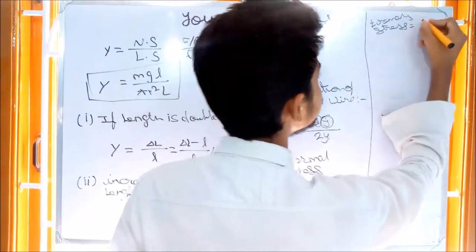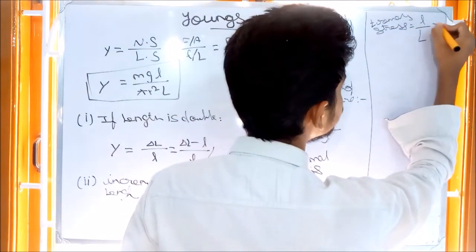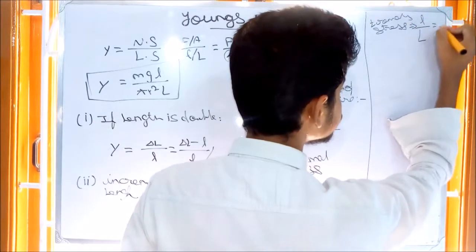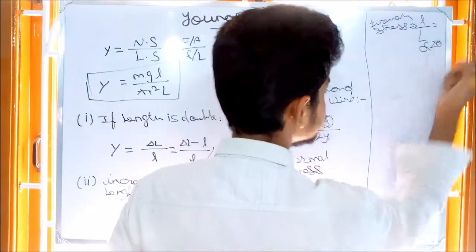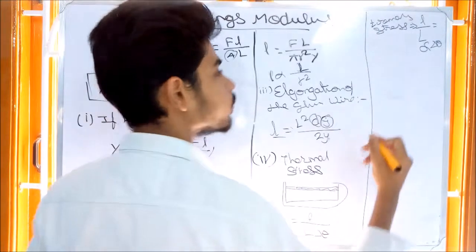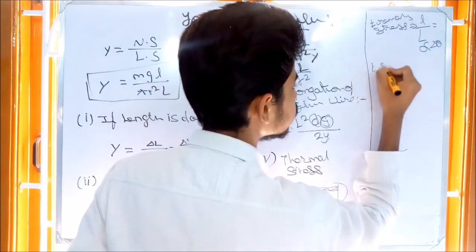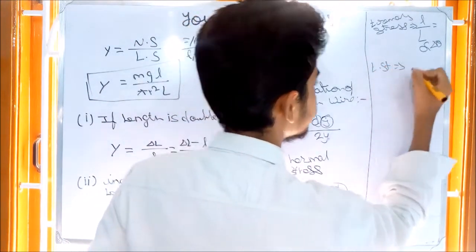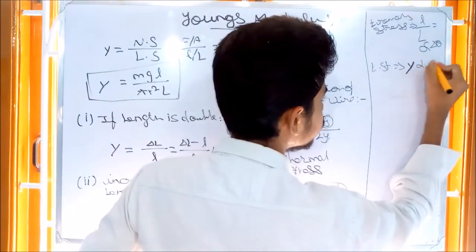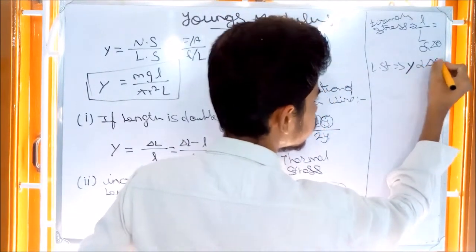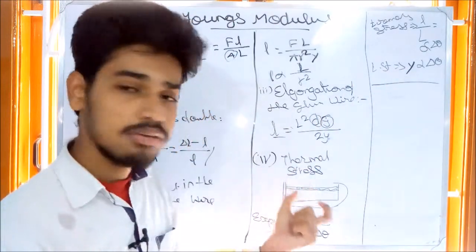Thermal strain is equal to alpha times delta theta. If we have this expansion, we will be able to solve for the thermal stress.